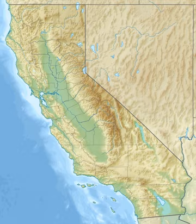Though San Francisco rebuilt quickly, the disaster diverted trade, industry, and population growth south to Los Angeles, which during the 20th century became the largest and most important urban area in the West. The 1908 Lawson Report, a study of the 1906 quake led and edited by Professor Andrew Lawson of the University of California, showed that the same San Andreas Fault which had caused the disaster in San Francisco ran close to Los Angeles as well. The earthquake was the first natural disaster of its magnitude to be documented by photography and motion picture footage, and occurred at a time when the science of seismology was blossoming.